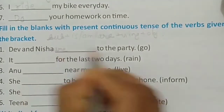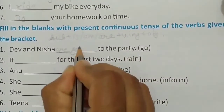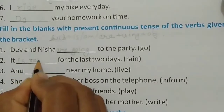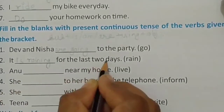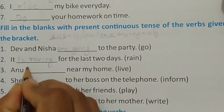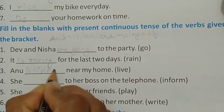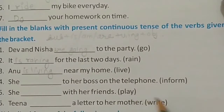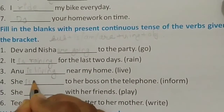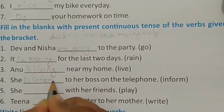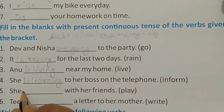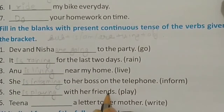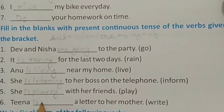Dev and Nisha — they are in plural form — so: Dev and Nisha are going to the party. It is raining for the last two days. Anu is living near my home. She is informing her boss on the telephone. She is playing with her friends. Tina is writing a letter to her mother.